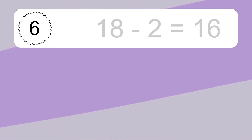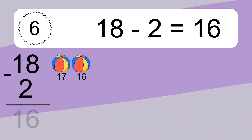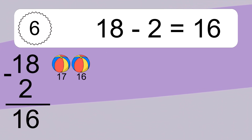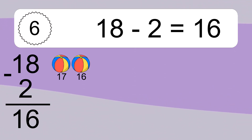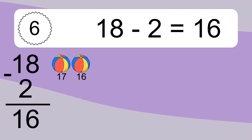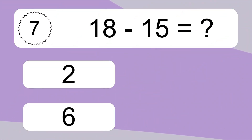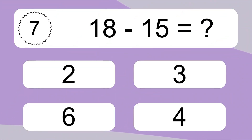18 minus 2 equals what? 18 minus 2 equals 16. Let's count it: 17, 16.